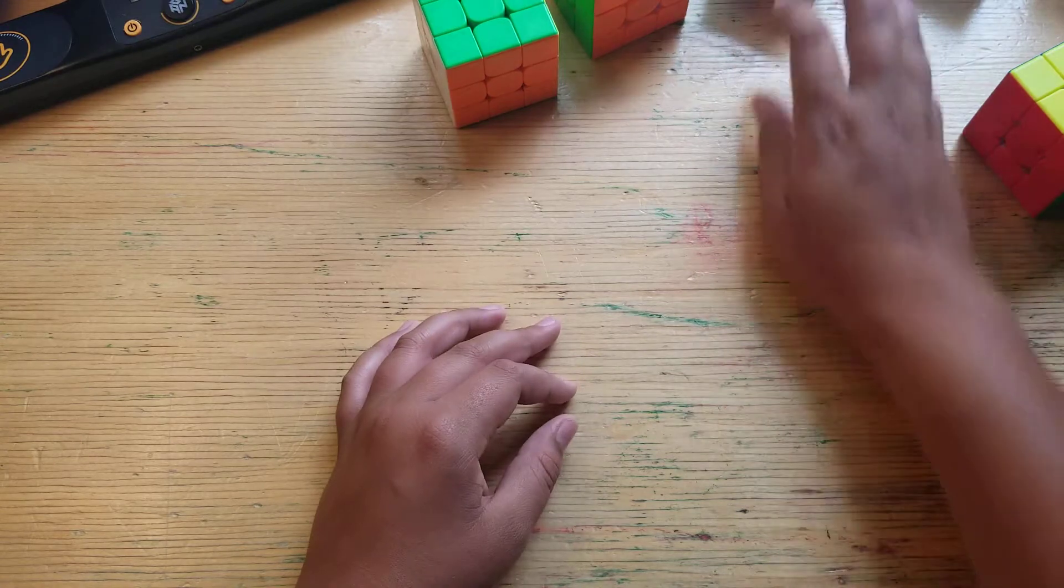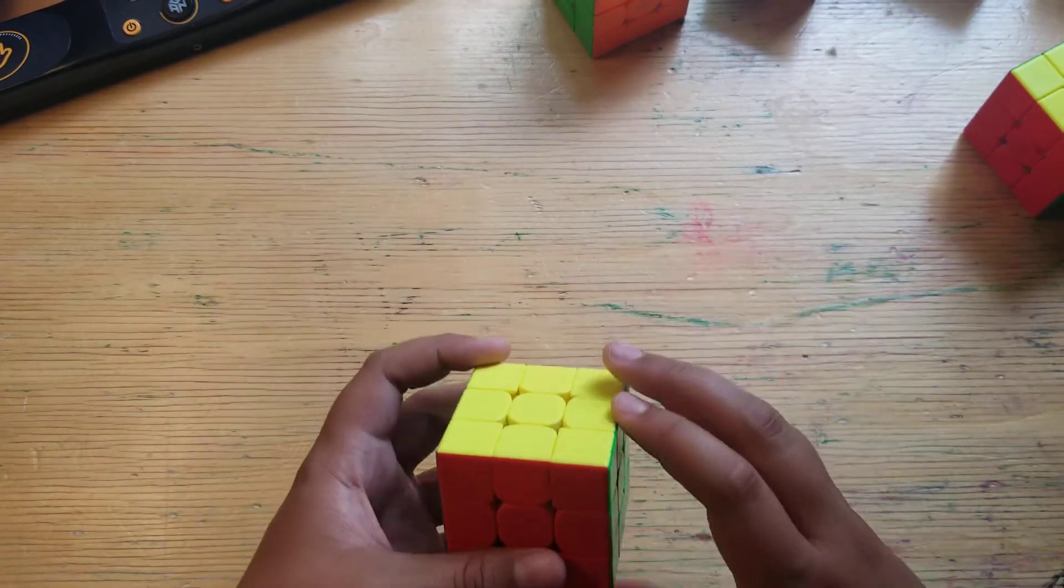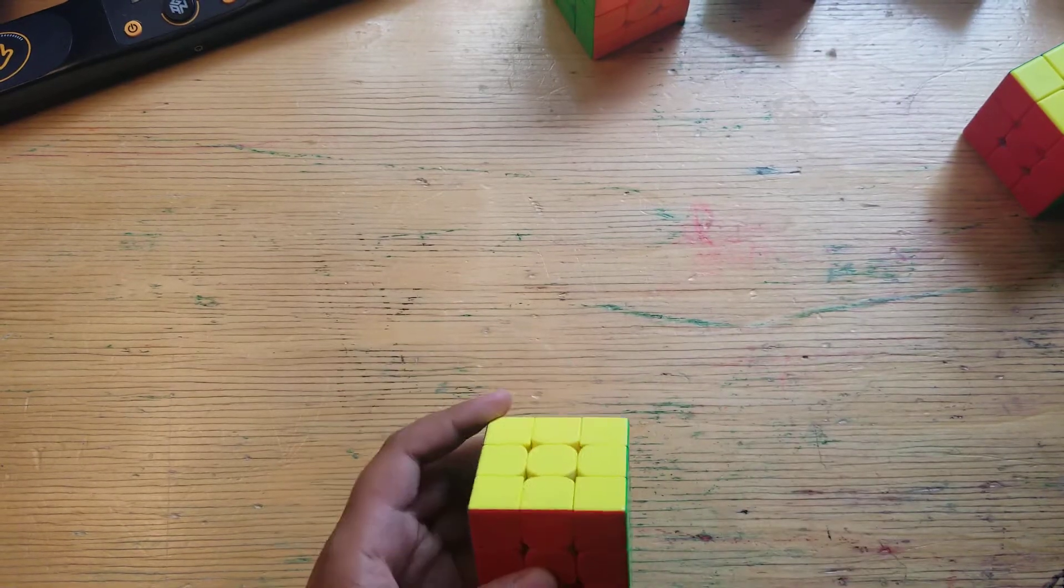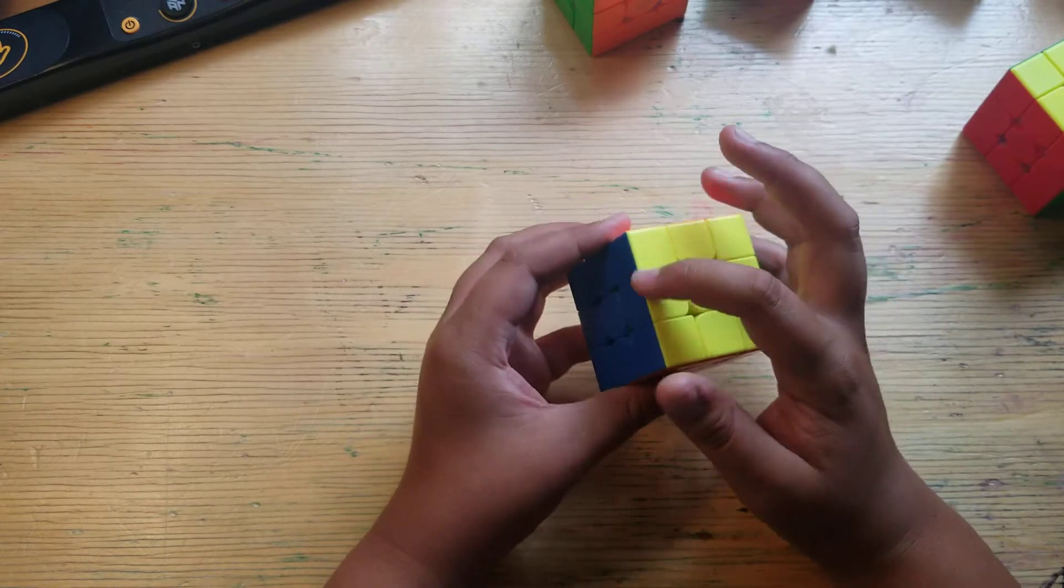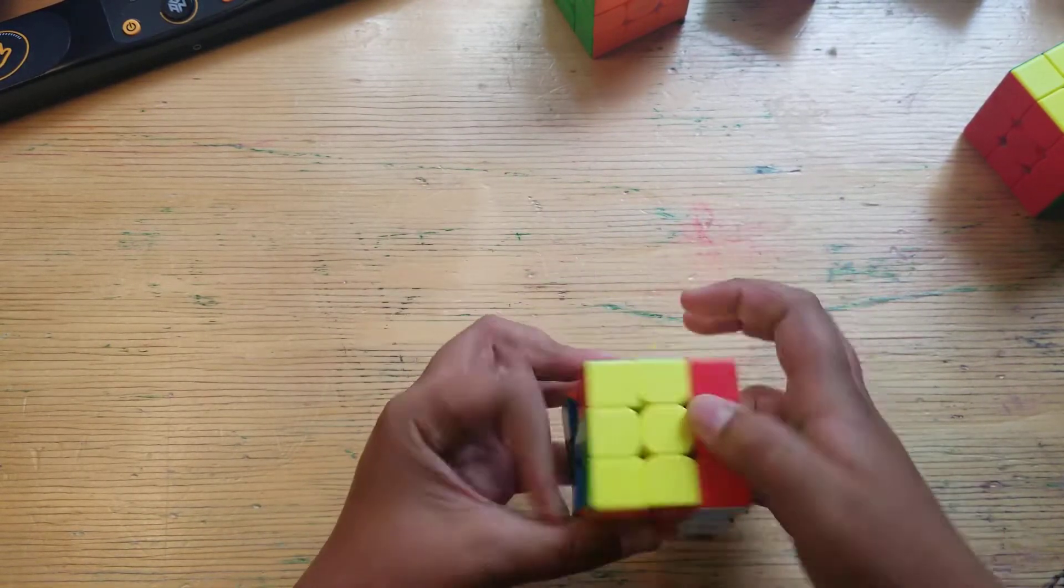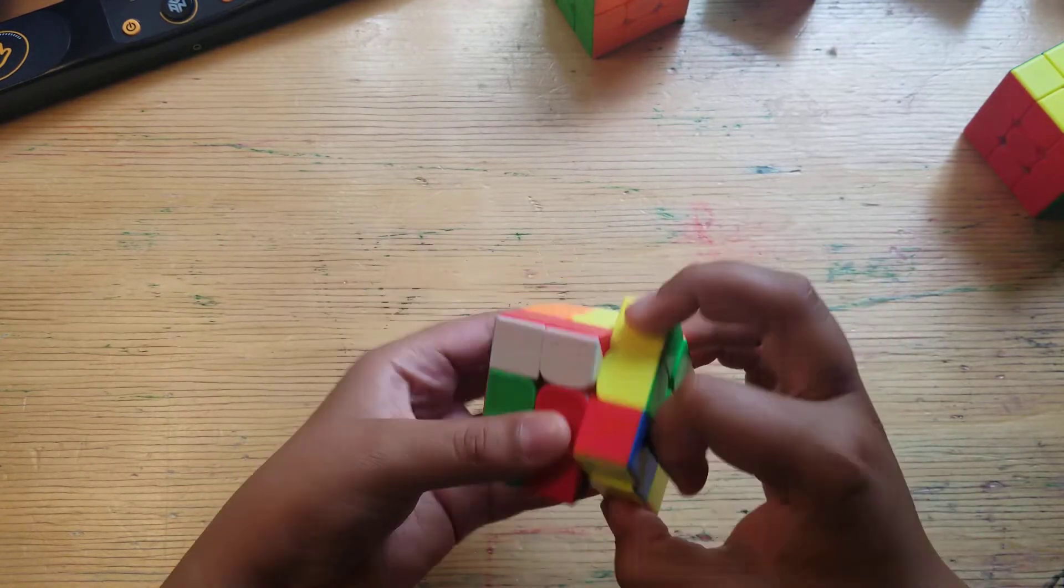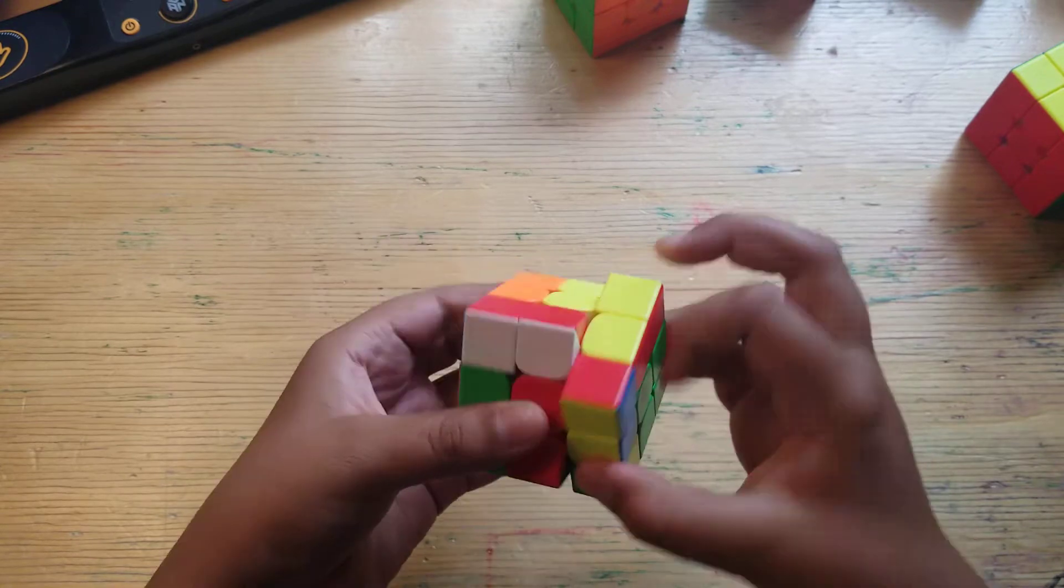Let's move on to the next one. Here's the Moyu Weilong WRN 2020, the updated version. It's basically the same cube but it has different center pieces. Let's do the first turns. Okay, it's not bad. It's really smooth and fluid.